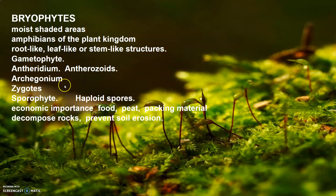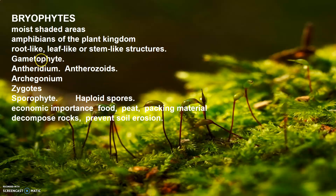Zygotes do not undergo reduction division immediately; they produce a multicellular body called the sporophyte. The sporophyte is not free-living but is attached to the photosynthetic gametophyte and derives nourishment from it. Some cells of this sporophyte undergo reduction division — meiosis — and produce haploid spores, and these spores germinate to produce the gametophyte again.